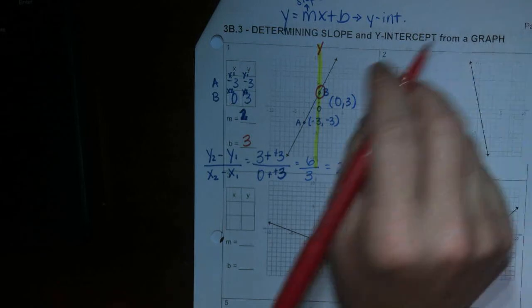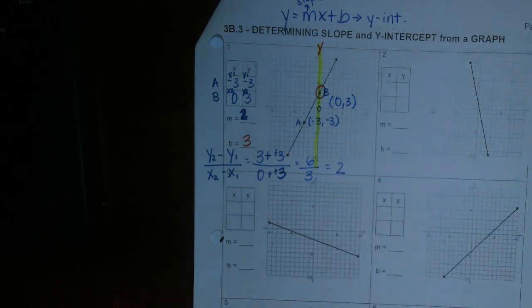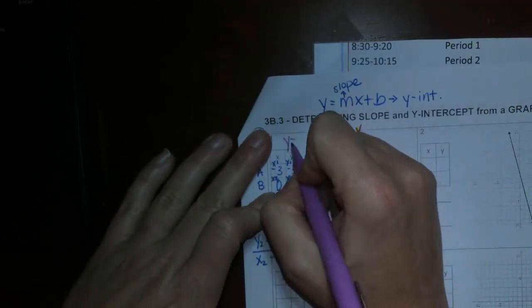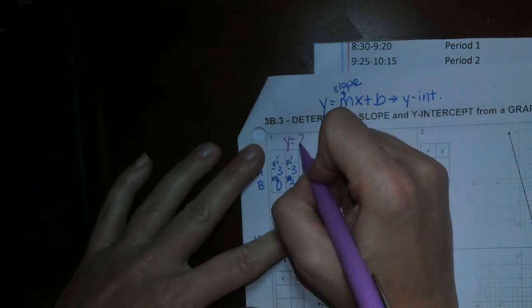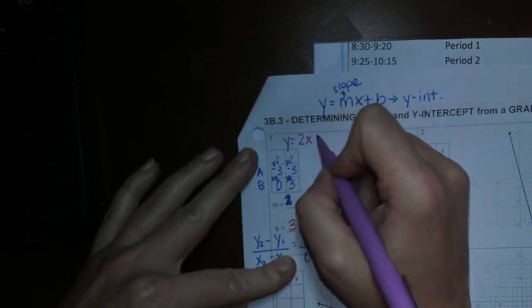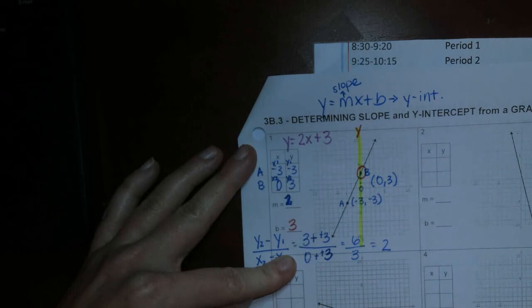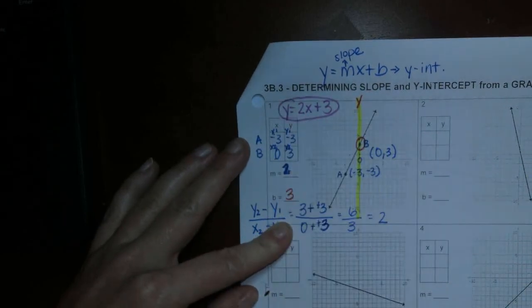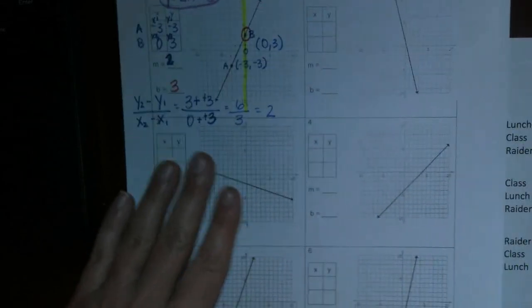So if we wanted to write this out in y equals mx plus b form, could we? Do we have the information? Yes. We have y equals m. Our m is 2x plus b. And our b was 3. So that would be the equation of this line. 2x plus 3.